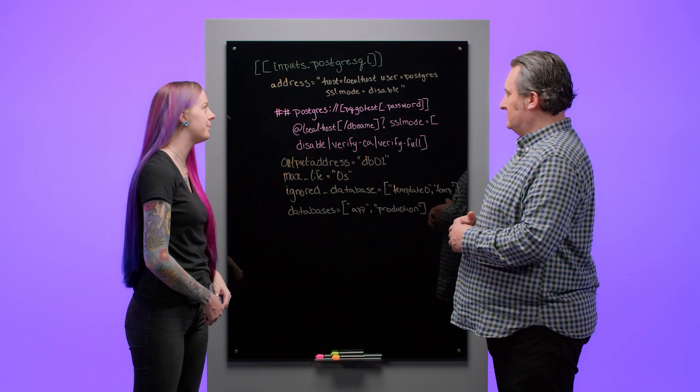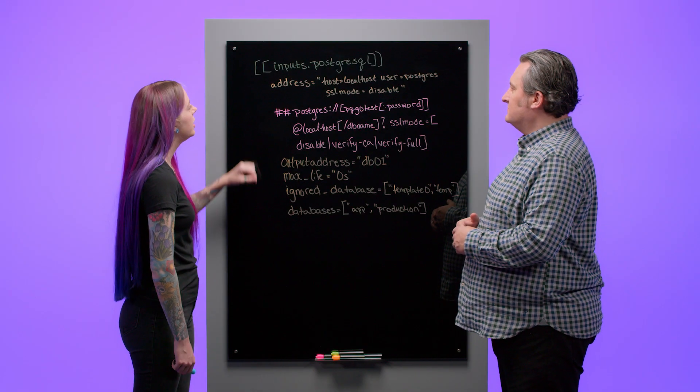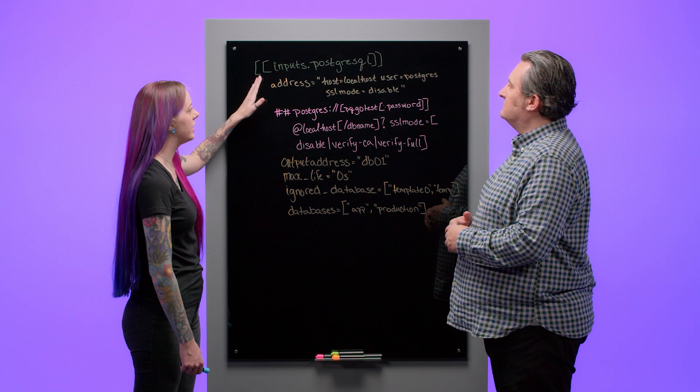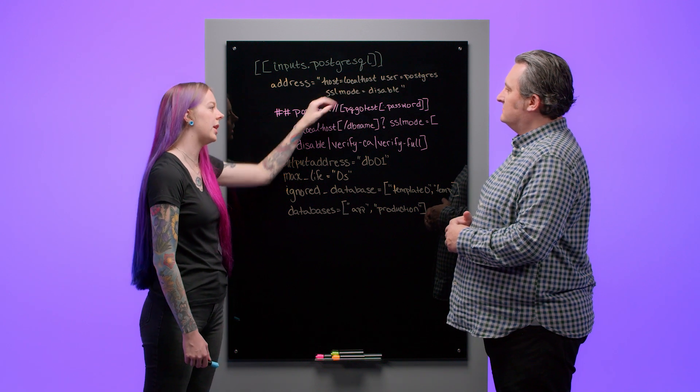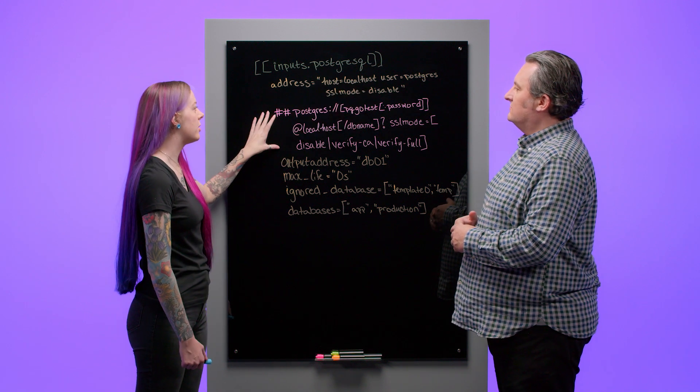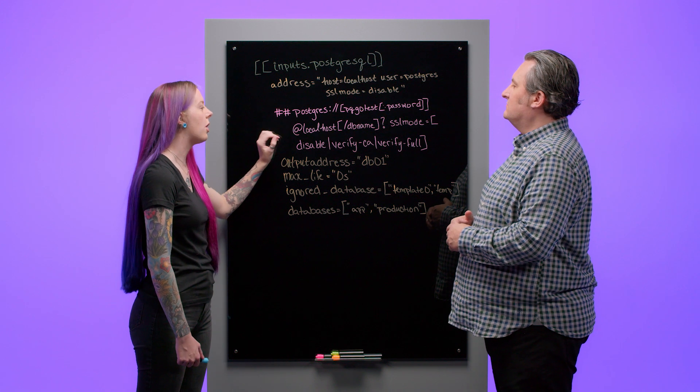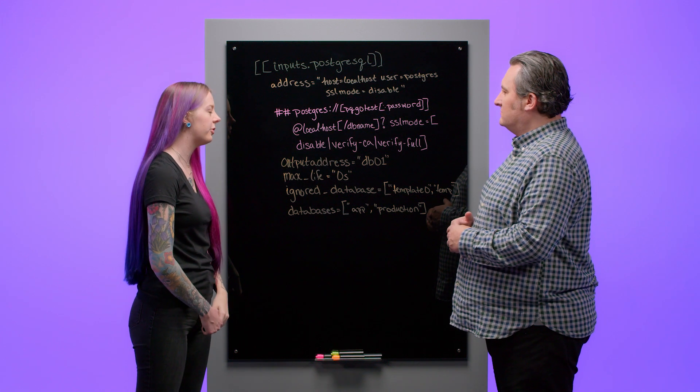Moving on to databases. How do I get data from Postgres? To get data from Postgres, you're going to want to use the PostgresQL input plugin. You have two options. You could set your address this way with your host, user, and SSL mode, or like this comment here, you can use a URL filling in your options that you prefer.